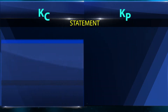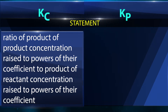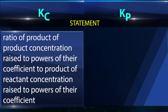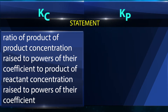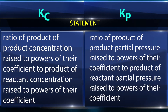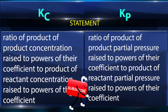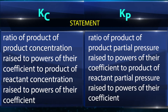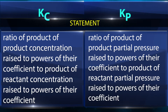Kc is the ratio of the product of product concentrations raised to the powers of their coefficients to the product of reactant concentrations raised to the powers of their coefficients. Kp is the ratio of the product of product partial pressures raised to the powers of their coefficients to the product of reactant partial pressures raised to the powers of their coefficients.